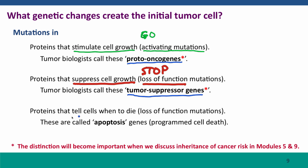There's a third class of mutations that can create an initial tumor cell or contribute to its creation: mutations in the proteins that tell cells when to die. This telling of cells when to die occurs as part of a specific regulatory process with a peculiar name — apoptosis. This is the programmed cell death that normally occurs in many of our cells, and that fails to occur in many tumor cells.